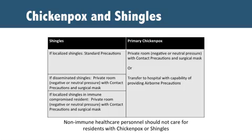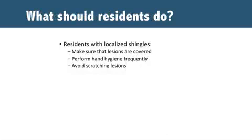If a resident is diagnosed with primary chickenpox, the resident must be placed in a private room with negative or neutral pressure and contact precautions. All health care providers and visitors should wear gowns, gloves, and surgical masks upon entry to the room. These precautions should remain in place until lesions crust over. Pregnant health care providers or visitors who are non-immune should not enter the room of a resident with shingles or chickenpox due to the risk of harm to the baby should the pregnant individual become infected.